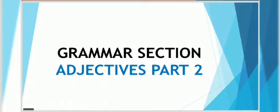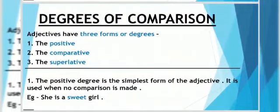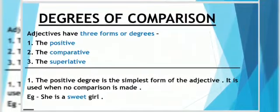Now the next part is degrees of adjectives. Adjectives have 3 forms or degrees: the positive, the comparative and the superlative.